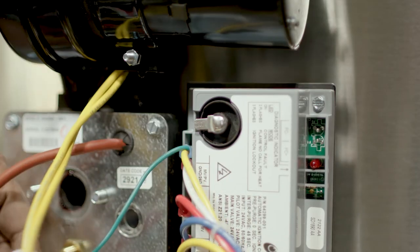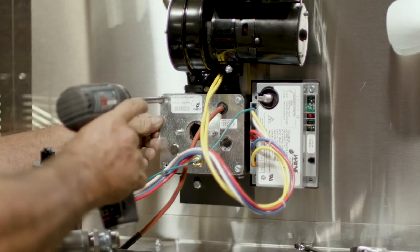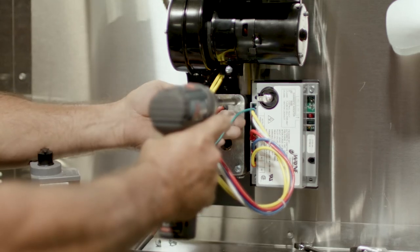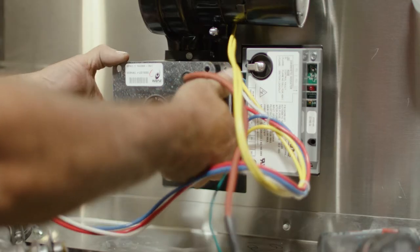Remove the spark wire from the ignition module. Remove the five-sixteenths bolts from the burner plate and remove the pilot assembly.